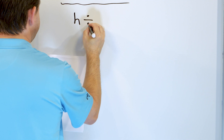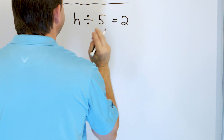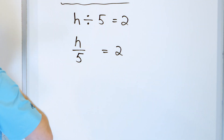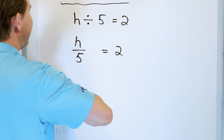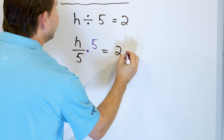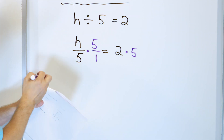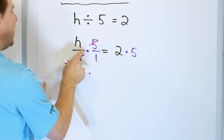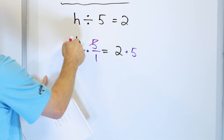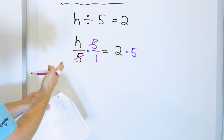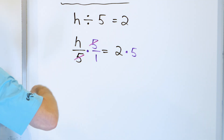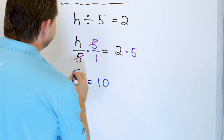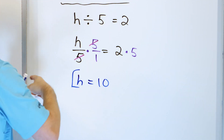What about h divided by 5 equals 2? Always write any division symbols as a fraction: h over 5 equals 2. We're dividing by 5, so we undo that by multiplying by 5 on both sides, writing it as 5 over 1 to help visualize what's happening. We have a 5 on top and a 5 on the bottom — they cancel. 5 divided by 5 is 1. So we have h equals 10. Check your work: 10 divided by 5 is 2. That is the final answer.